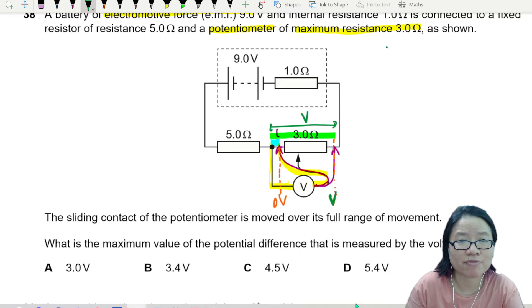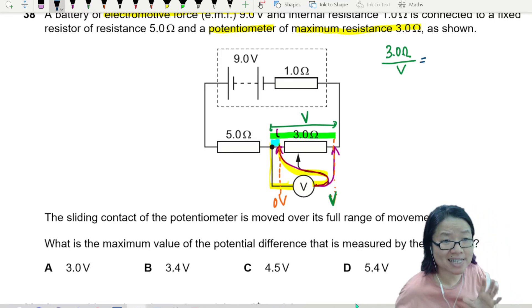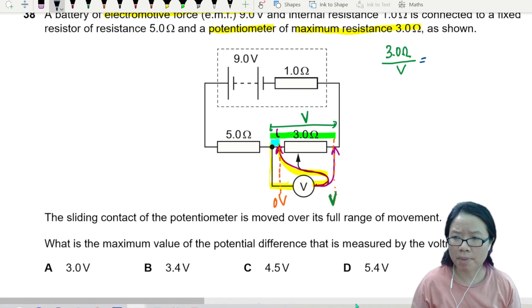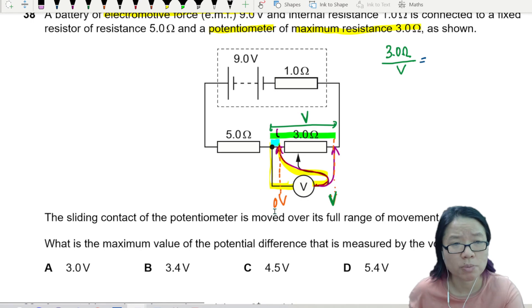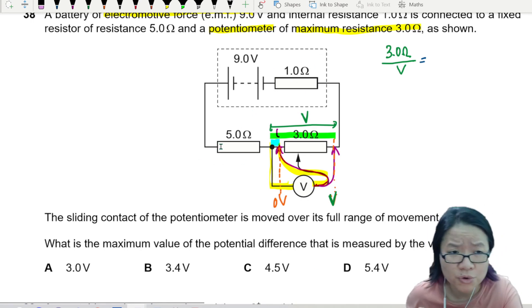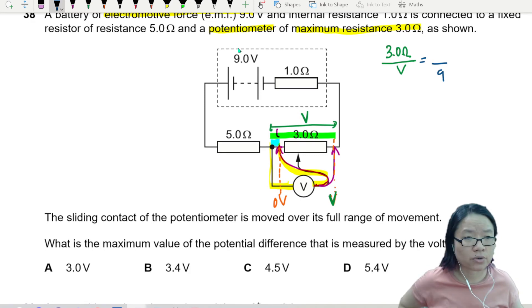So I have the resistance of 3.0 ohms and I want to find the potential difference of this resistance. I need to compare with somebody else that shares the same current. Good news, this is in series, so everybody has the same current. I can compare with one, I can compare with five, but I don't really want to compare with one and five because I don't know the potential difference across them. But I know this 9 volts is for the whole thing. This 9 volts is for the entire circuit.